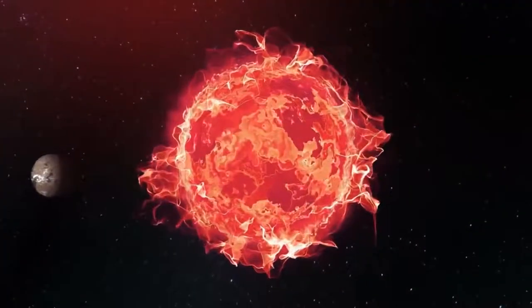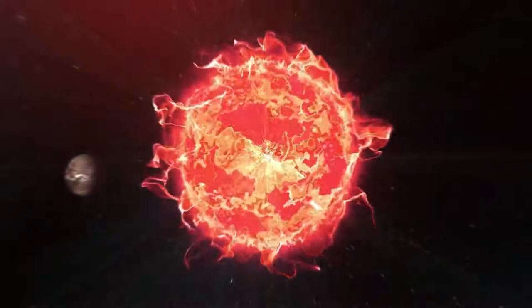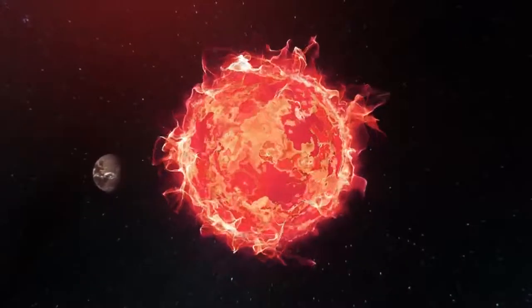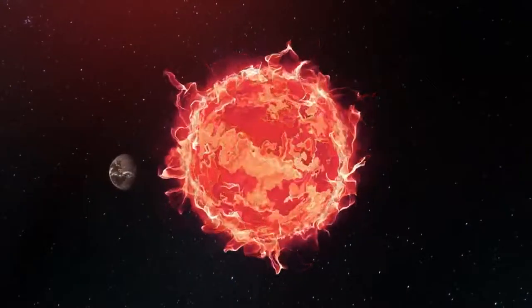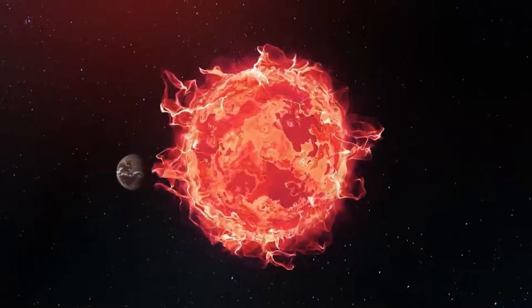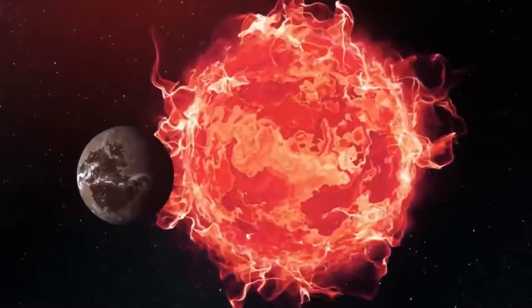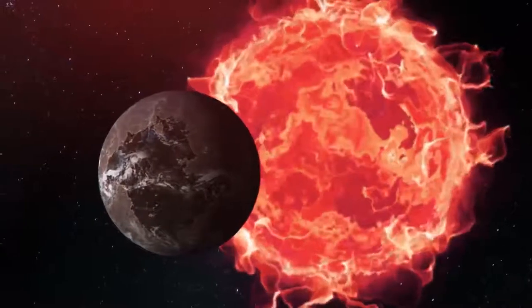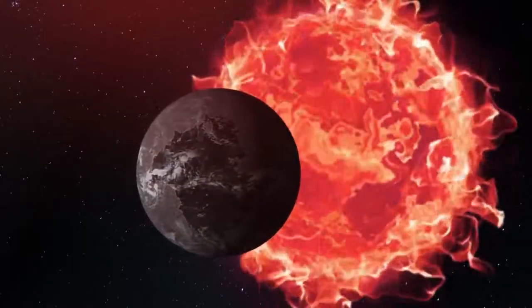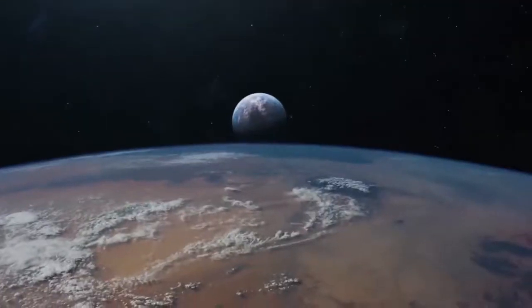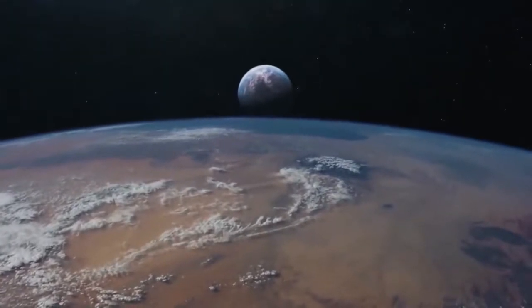But that same year, a massive solar flare had erupted from the red dwarf star Proxima Centauri that was 1,000 times brighter than the star itself. It hit Proxima b with 4,000 times more ultraviolet radiation than the Earth would get from a solar flare from our sun, and researchers believe that this could have wiped out all traces of life on the planet. But Proxima b is not the only candidate as a habitable planet.